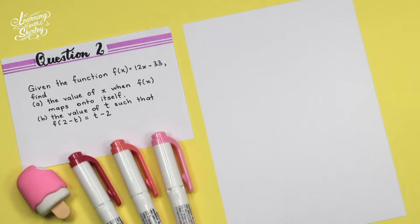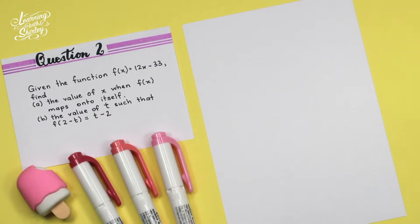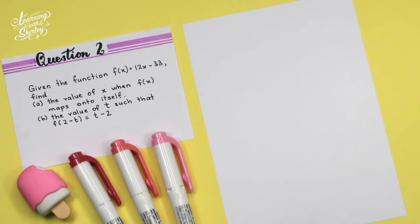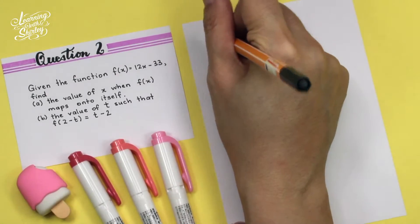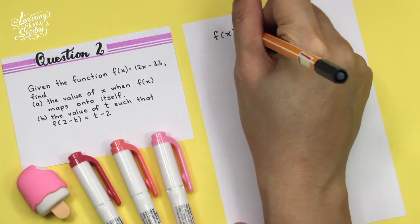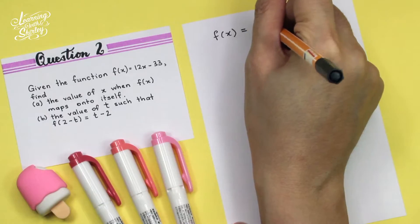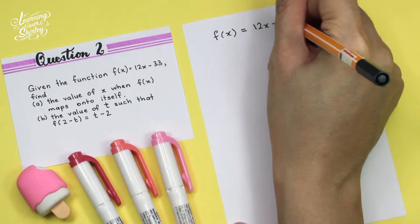For question 2, given the function FX is equal to 12X minus 33. Find A, the value of X when FX maps onto itself, and B, the value of T such that F(2 minus T) is equal to T minus 2. So firstly, we write down the function given, which is FX equals 12X minus 33.